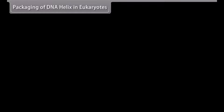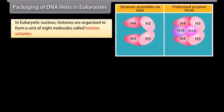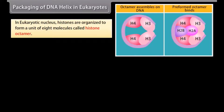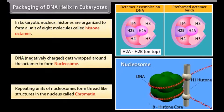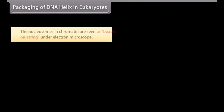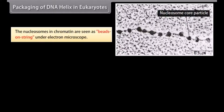In eukaryotic packaging: histones are organized to form a unit of 8 molecules called a histone octamer. DNA, being negatively charged, gets wrapped around the octamer to form a nucleosome. Repeating units of nucleosomes form thread-like structures in the nucleus called chromatin. The nucleosomes in chromatin are seen as beads on a string under an electron microscope.